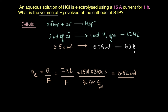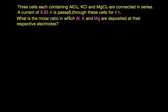The second question says: three cells each containing molten AlCl₃, KCl, and MgCl₂ are connected in series, and a current of 9.65 amperes is passed through these cells for four hours. What is the molar ratio in which aluminium, potassium, and magnesium are deposited at their respective electrodes? Let's first figure out the total charge passed through the cells.